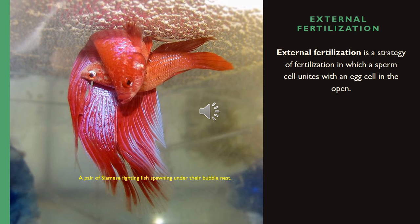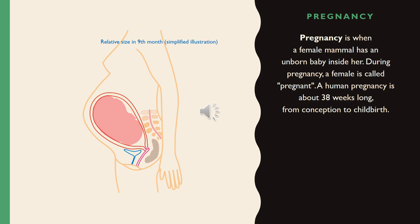External fertilization is a strategy of fertilization in which a sperm cell unites with an egg cell in the open. Pregnancy is when a female mammal has an unborn baby inside her; during pregnancy, a female is called pregnant. A human pregnancy is about 38 weeks long from conception to childbirth.